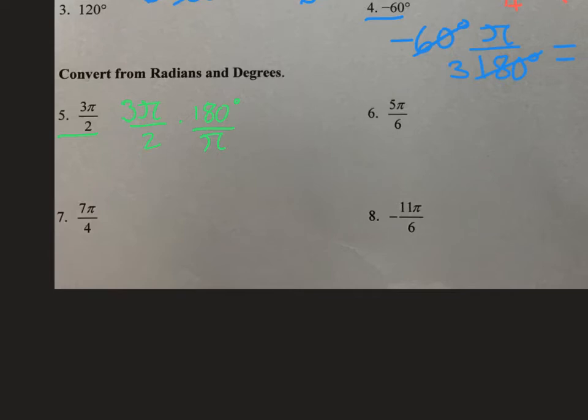So we have 180 divided by 2. That is equal to 90. And then we multiply by 3. That is equal to 270. And then our π's cancel. So we are left with 270 degrees.